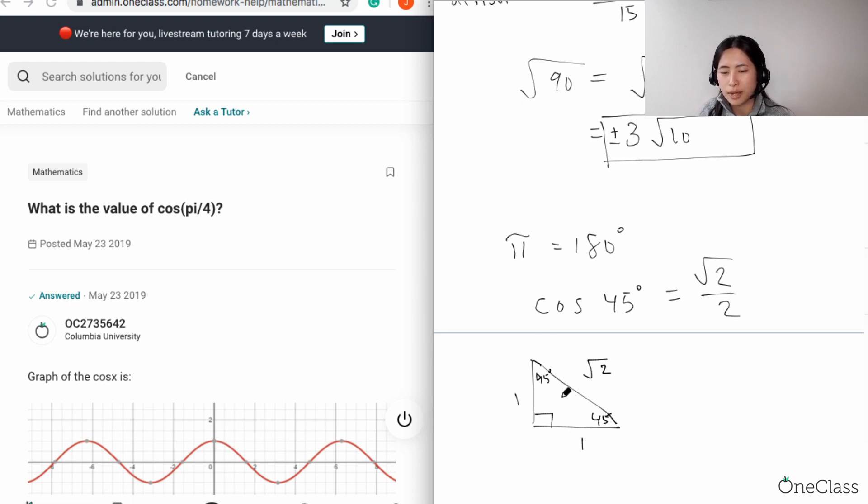Great, so now that we have this, remember this is a special triangle. Because it's cosine we're taking the adjacent side, or whichever 45 degrees you're looking at. But let's say we're looking at this, the adjacent side is one. So that's SOHCAHTOA, right, adjacent over hypotenuse which is square root of two.